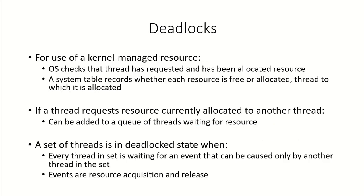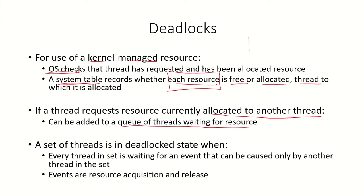When a process requests a resource managed by the kernel or operating system, the OS checks whether the requesting thread has been allocated that resource. It maintains a system table that records, for each resource, whether it is free or allocated, and if allocated, to which thread or process. If the requested resource is currently allocated to another thread, the requesting process is added to the queue of threads waiting for that resource.